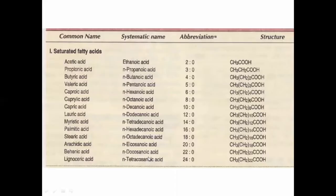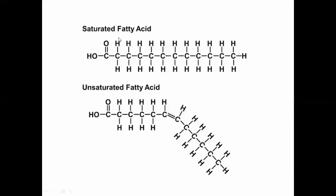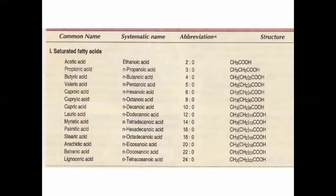Let's see the examples in detail. Saturated fatty acids contain only single bonds, meaning no double bond in the carbon chain. Because there is no double bond present, they are solid at room temperature. Saturated fatty acids are divided into two classifications: even number of carbons and odd number of carbons.